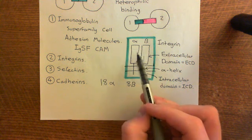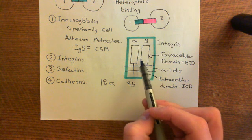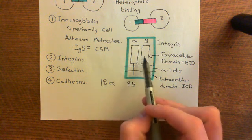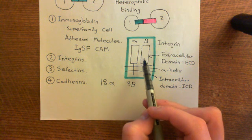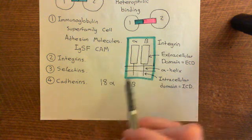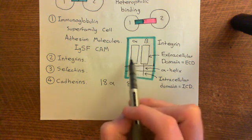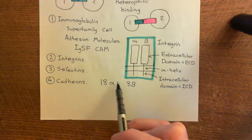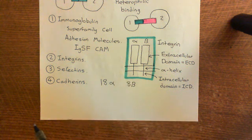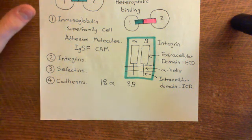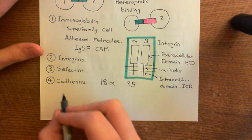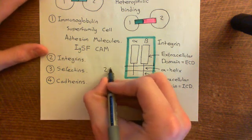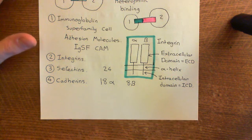There are 18 possible choices of alpha subunit and 8 choices of beta subunit, meaning in principle 18 times 8 equals 144 possible integrins. However, the number actually found in the human body is only 24 — so not all combinations of these 18 alpha and 8 beta subunits are used in vivo.